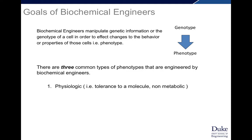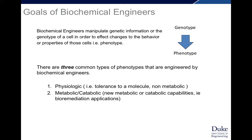The first type is physiologic — for example, tolerance to a molecule or other non-metabolic characteristics of a phenotype, like making a green cell. Then there are metabolic or catabolic phenotypes, which would be new metabolic or catabolic capabilities: eating new carbon sources, consuming cellulosic sugars, bioremediation of toxic compounds. And then population-based phenotypes, which would be production in a fermentation of a molecule of interest.